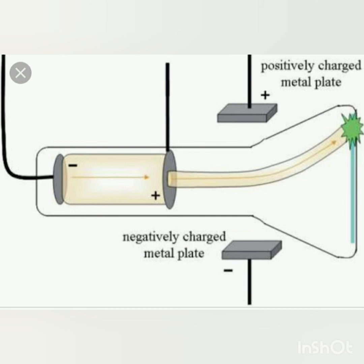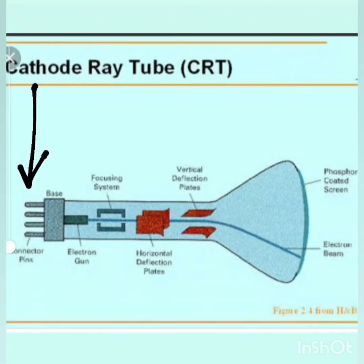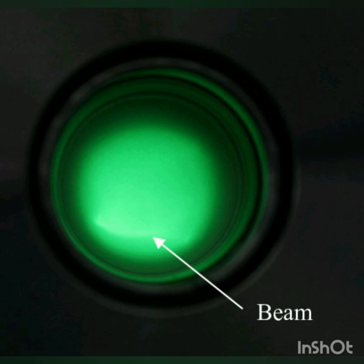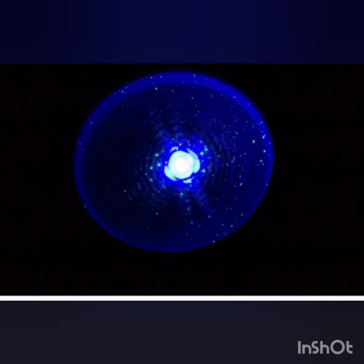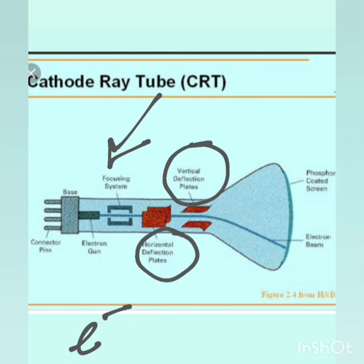Moving towards the CRT components and working, starting with connector pins, which are externally fitted outside the CRT. Then the electron gun, which is the source of electrons — that is the electron beam that falls on the phosphorescent screen and helps in creating images. The beam forms a dot-like representation of high intensity at the start which then gradually decreases. A focusing system helps all the electrons move towards the deflectors, and the horizontal and vertical deflection plates decide where the electron ray should fall on the screen.